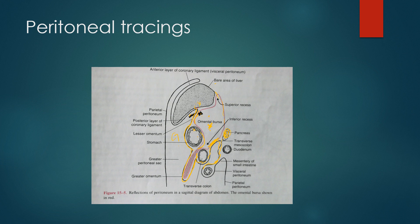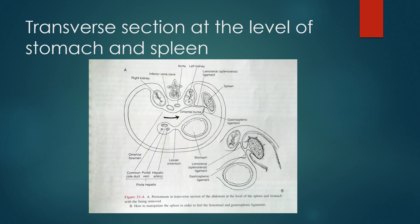This is the small bowel mesentery, covering the small gut. Then the peritoneum continues posteriorly, lower down, and goes into the pelvis. We will discuss the arrangement of the peritoneum in the male and female pelvis in the next slide. Now this diagram shows the peritoneum reflection at the level of the stomach and the spleen.